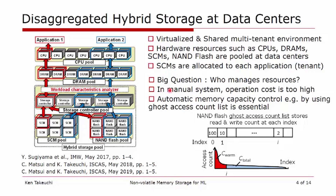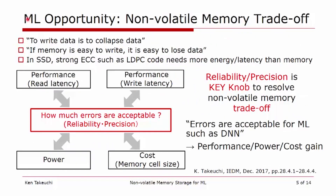Next, we will move to AI, including machine learning. Before going to AI, we have to think about the trade-off of non-volatile memories. This trade-off is very simple and very critical: if the memory cell is easy to write, it's easy to corrupt data. The reliability of keeping data, and the operation speed such as write speed or read speed, have a trade-off relationship. As you can see in this figure, read latency, write latency, power, and cost have a trade-off, and the key knob is reliability or precision.